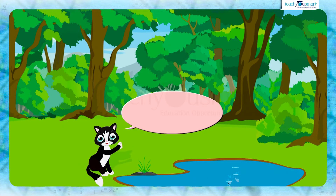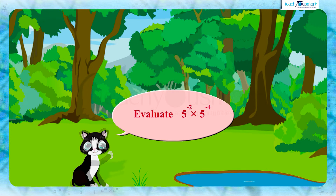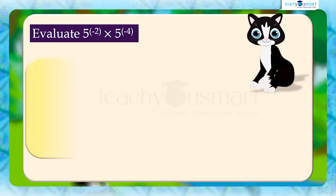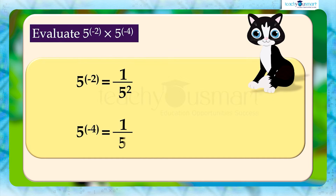Let's try to do an example. Evaluate 5 raised to minus 2 multiplied by 5 raised to minus 4. We know that 5 raised to minus 2 equals 1 by 5 squared, and 5 raised to minus 4 equals 1 by 5 raised to 4.